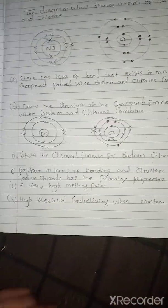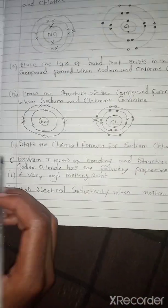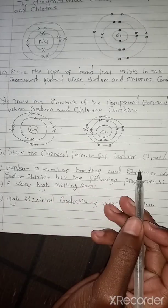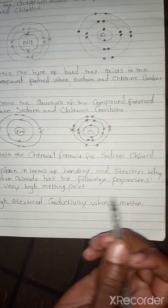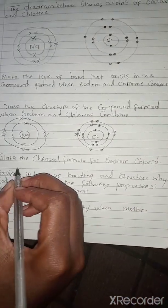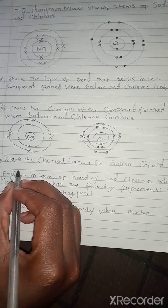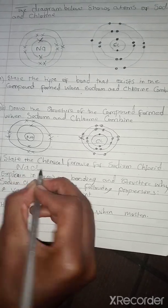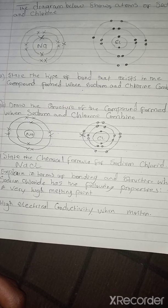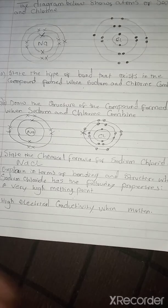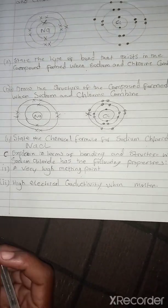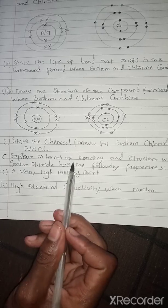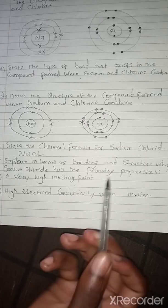The question also asks us to state the chemical formula for sodium chloride. The chemical formula for sodium chloride is NaCl.